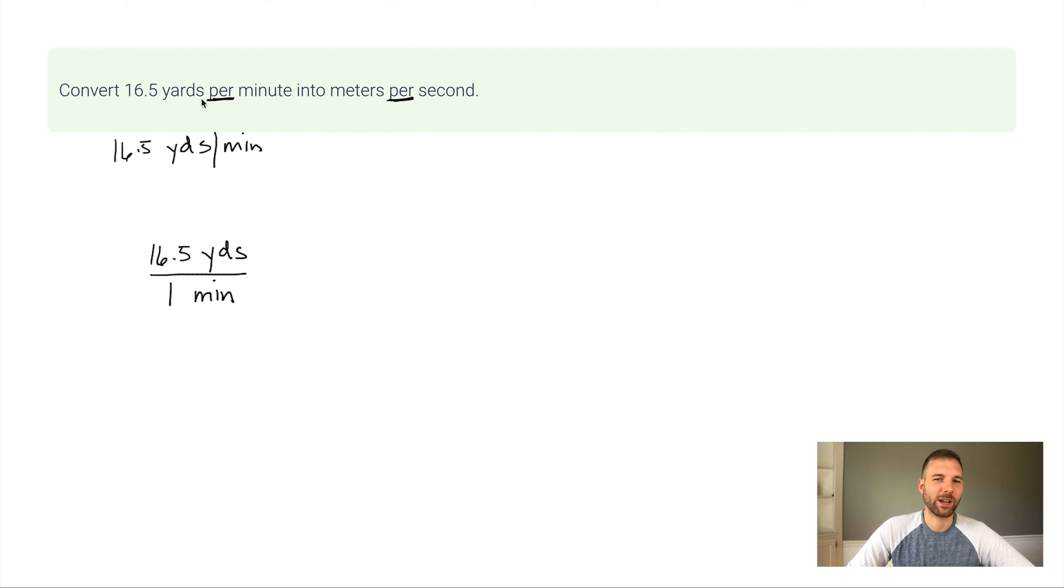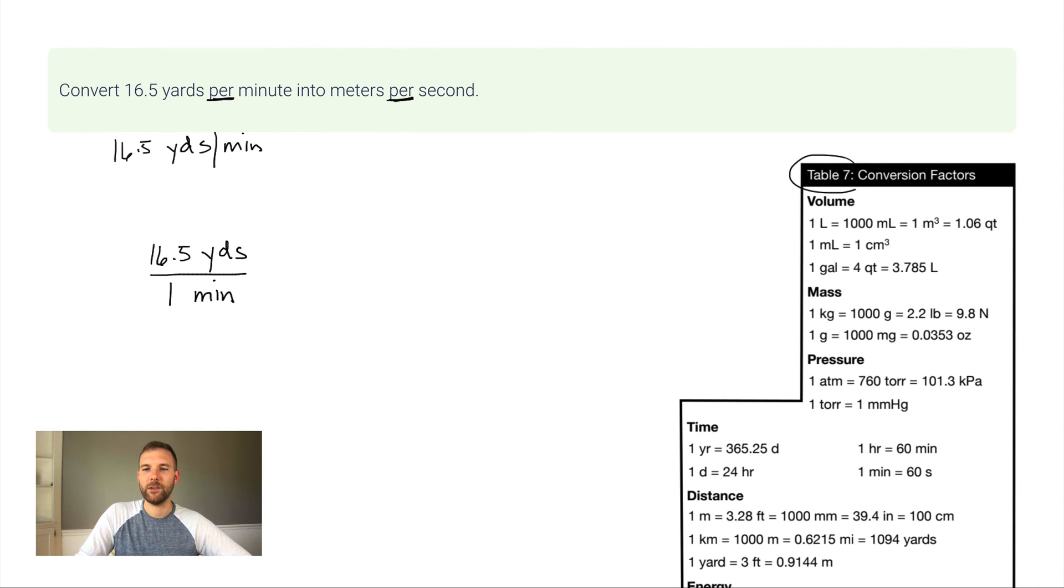Now, I need to actually do a couple different conversions here. I have to convert yards into meters and I have to convert minutes into seconds. So for something like this, I recommend you take out table seven or any reference table. You could Google some of these conversion factors too. In our class, table seven is in your reference tables and it's got a listing of the most common conversion factors. So for this one, we're looking at both distance and we're looking at time. So let's first convert yards.